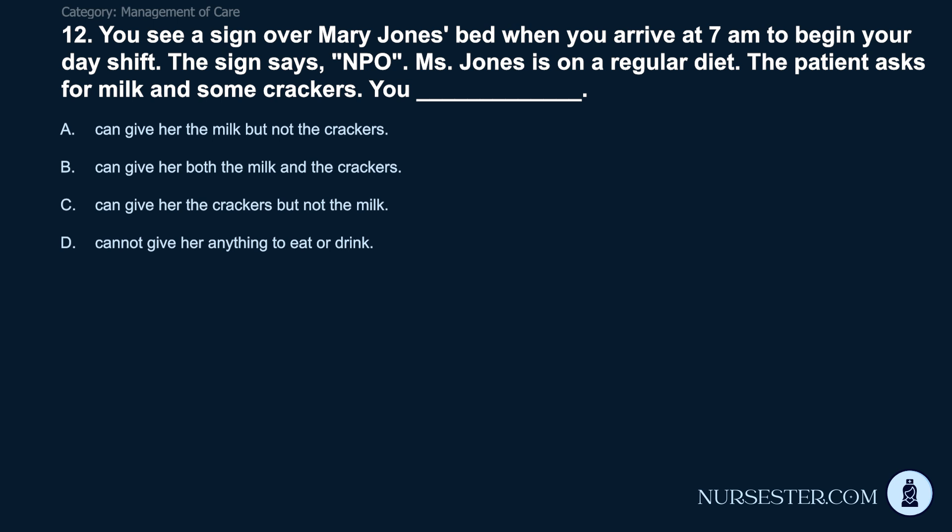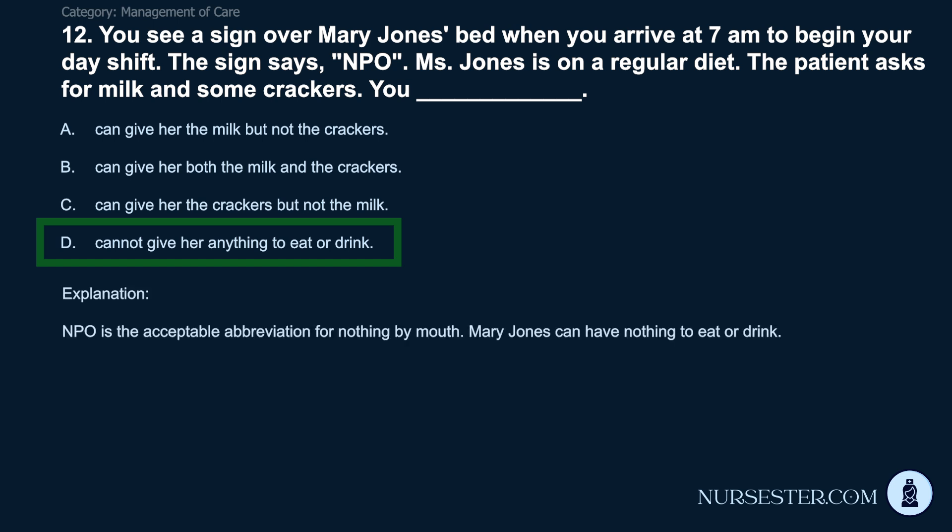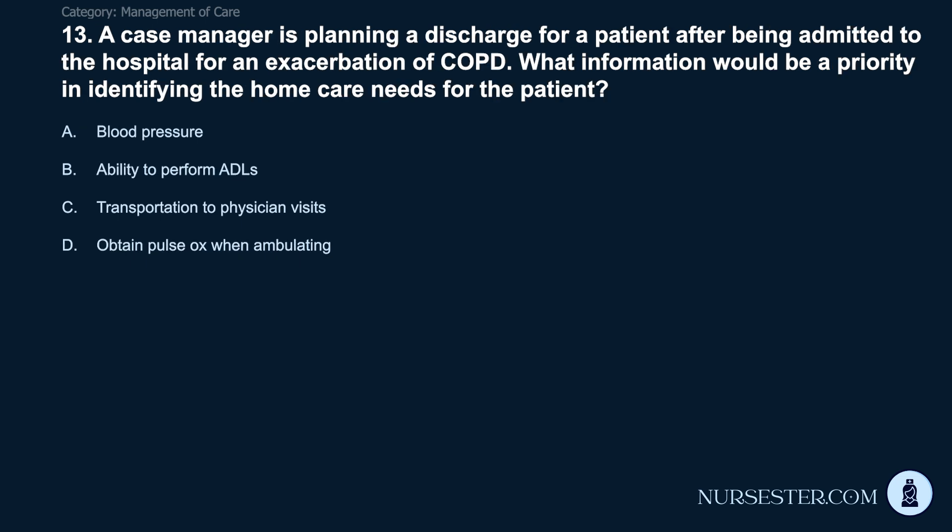Question 12: A sign over a patient's bed says NPO; the patient is on a regular diet. She asks for milk and crackers. You: A) can give her the milk but not the crackers. B) can give her both. C) can give her the crackers but not the milk. D) cannot give her anything to eat or drink. Correct answer: D. Cannot give her anything to eat or drink. NPO is the acceptable abbreviation for nothing by mouth.